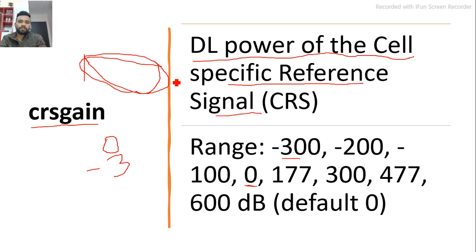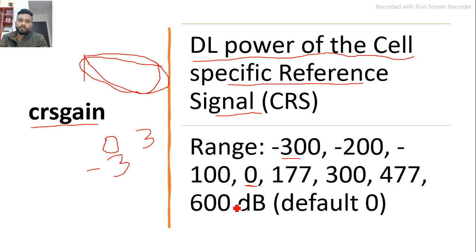Conversely, if you want to increase coverage — for example, some users cannot access the network due to poor coverage — you have to increase CRS Gain from 0 to 3 dB, 1.77 dB, 4.77 dB, or 6 dB. By increasing this parameter, you can extend your coverage and allow boundary cell users to connect to the network, thereby improving network performance.